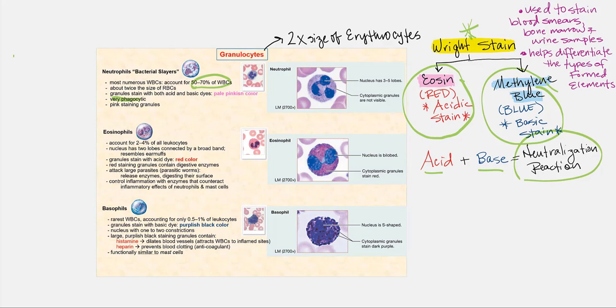Neutrophils are extremely phagocytic. In fact, they are the first leukocytes to arrive at the scene of injury, which we'll discuss further when we look at the lymphatic system and immunity. Under the microscope, the nucleus will have about three to five lobes, and the cytoplasmic granules will stain pink.